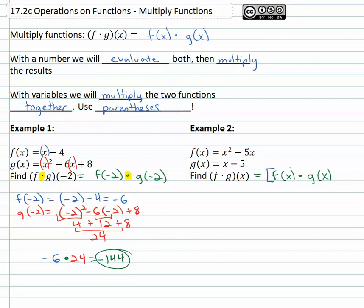Since we don't know what x is, we're going to just use the entire function f of x. f of x is the x squared minus 5x. And we're going to multiply it by whatever the g of x function is, which we know is x minus 5. So we're multiplying these two binomials together in parentheses, that's important, which tells us we have to FOIL.